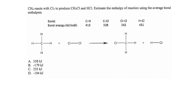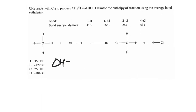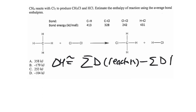This problem is talking about CH4 reacting with Cl2 to produce CH3Cl and HCl, and gives us some bond strengths. The key with bond strengths is they allow us to approximate our delta H of reaction. This is an approximation method by taking the sum of the bond strengths that we break in the reactants, and then we subtract the bond strengths of the products.